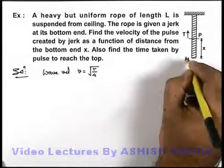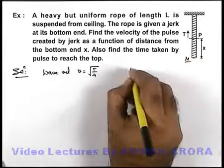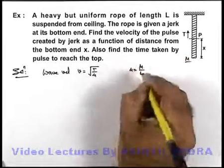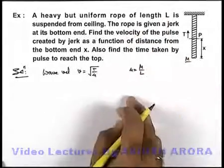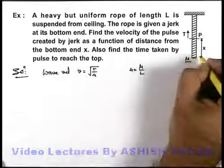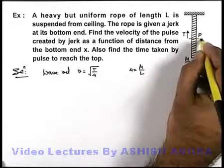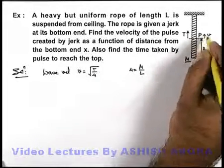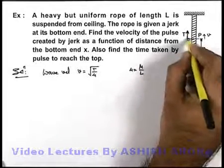If we take the mass of this rope to be m, its μ can be written as m by L, as length is given as L. Now in this situation at a distance x from the bottom end, if we wish to find out the wave velocity we need to find out the tension in the string.